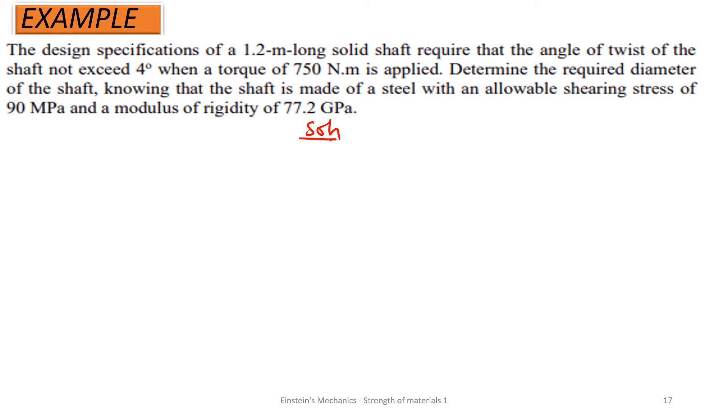Knowing that the shaft is made of steel which has allowable shear stress of 90 MPa and modulus of rigidity at 77.2 GPa. So straight away, let's dive into this. We can have our parameters written from here. I have the length of the shaft L to be 1.2 meters, which is also 1200 millimeters. We have the theta, which is the twist, as 4 degrees, but the standard units should be converted to radians. So that would be 4 multiplying pi on 180, giving us 0.0698 radians.